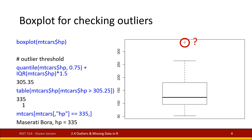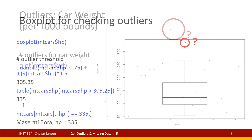Looking at the mtcars dataset filtered by horsepower equal to 335, it tells me that there was one car — the Maserati Bora — and the Maserati Bora happens to have 335 horsepower. There are a couple of other variations on how the filtering commands could be done, but I tried to make it fairly straightforward to follow here.